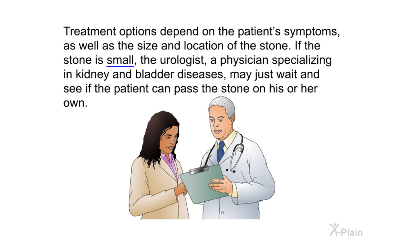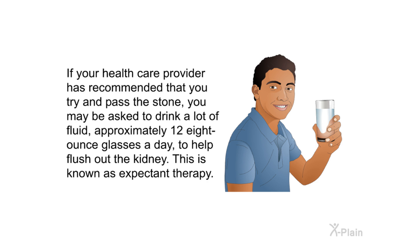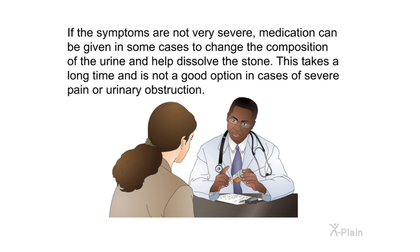Treatment options depend on the patient's symptoms as well as the size and location of the stone. If the stone is small, the urologist — a physician specializing in kidney and bladder diseases — may just wait and see if the patient can pass the stone on his or her own. Patients are usually given medication to help with the severe pain. If your health care provider recommends trying to pass the stone, you may be asked to drink approximately 12 eight-ounce glasses of fluid a day to help flush out the kidney. This is known as expectant therapy.